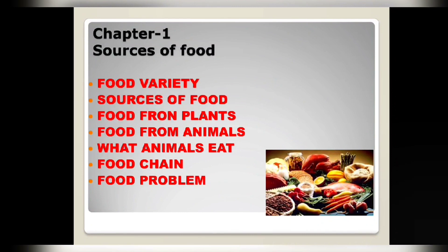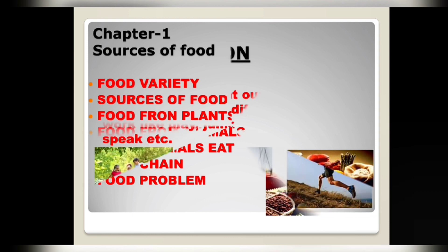In this chapter, we learn about the sources of food. First, food variety, in which we learn different varieties of food. Second, food from plants and food from animals, in which we learn the sources of food we get from plants and animals — for example, the source of wheat grain is plant and the source of milk is animal. Third, food chain, in which we learn the feeding relationship among organisms. Fourth, food problem, in which we learn about problems like wastage of food, shortage of food, overeating, etc.